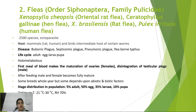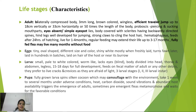Fleas are holometabolous, having four life stages. Notably, the first blood meal triggers maturation of ovaries in females and disintegration of testicular plugs in males, making them fully mature. In a colony, approximately 5% are adults, 50% are eggs, 35% are larvae, and 10% are pupae. Adults are bilaterally compressed, 3 mm long, brown, wingless, and efficient jumpers — capable of jumping up to 50 times their body length.